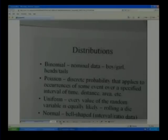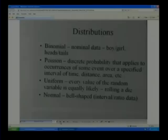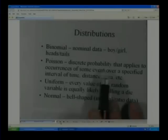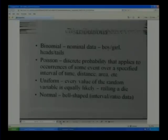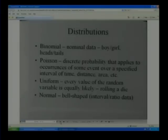Binomial distribution measures nominal data. Boy, girl, head, tails. Poisson measures discrete probability that applies to occurrences of some event over specified interval of time, distance, or area. This is often used to do rare events like earthquakes or how many times I get to the front of the line at the checkout counter.